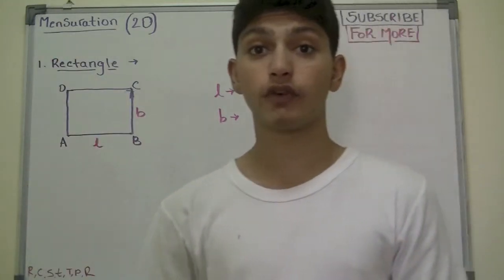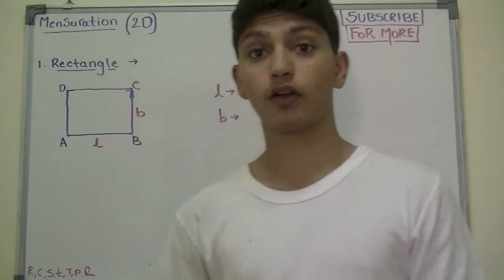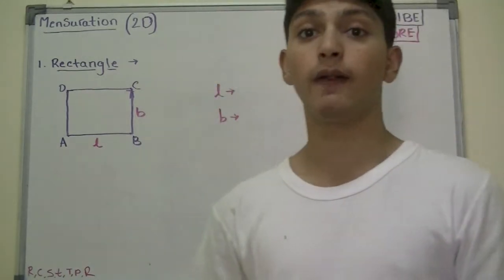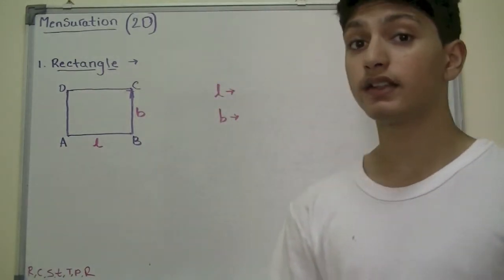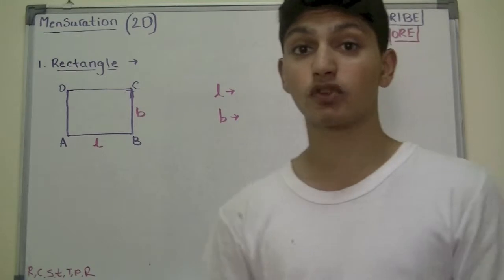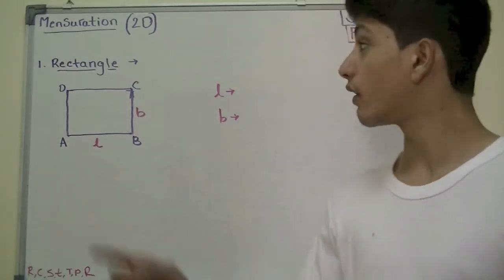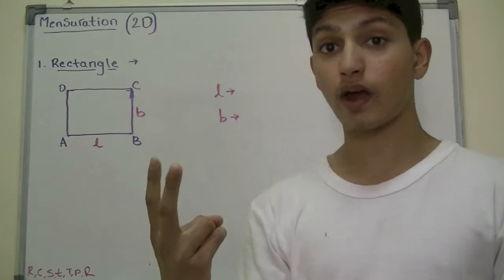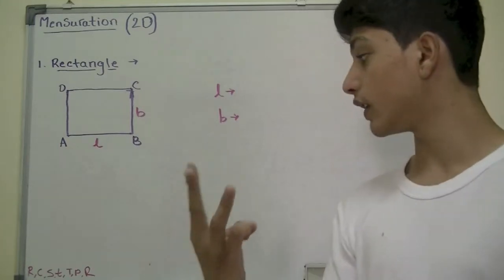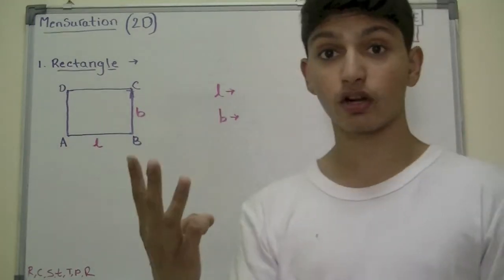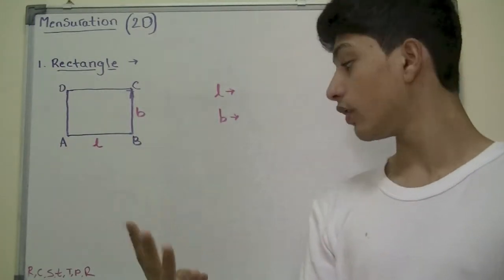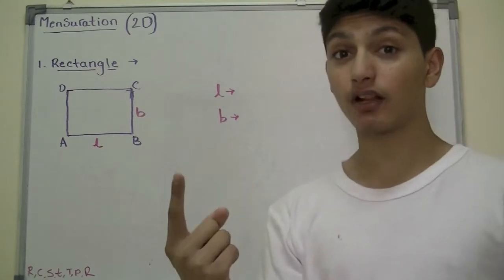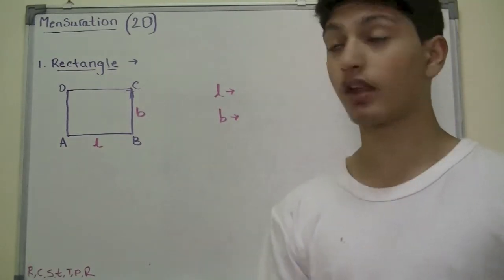Starting off with rectangle. There are 6 types of 2D figures: rectangle is one of them, second is square, third is circle, fourth is triangle, fifth is trapezoid, sixth is parallelogram, and rhombus.